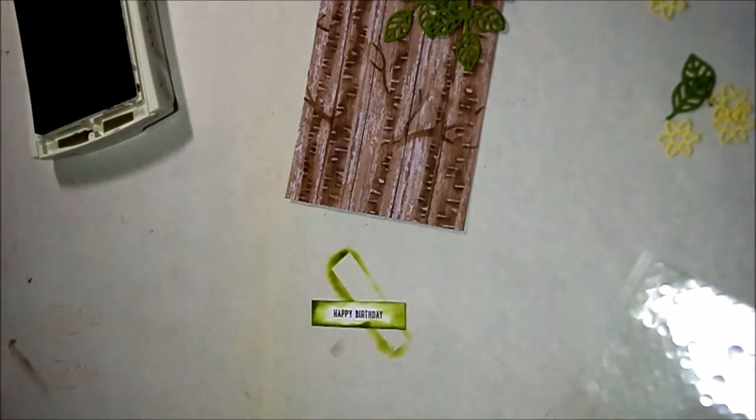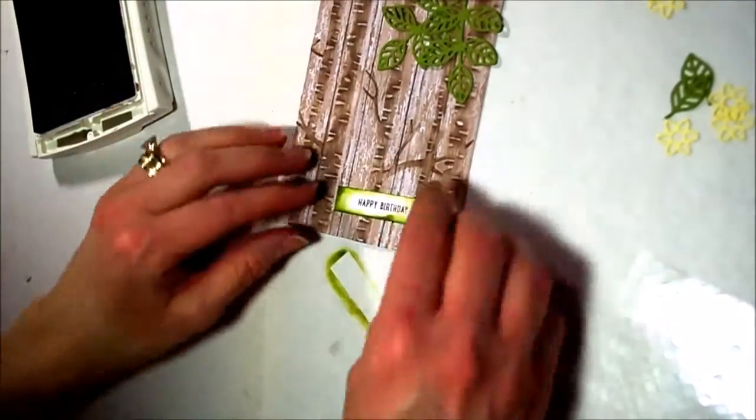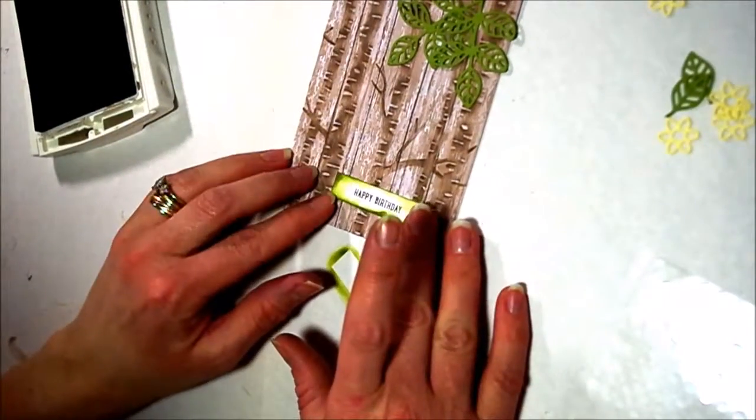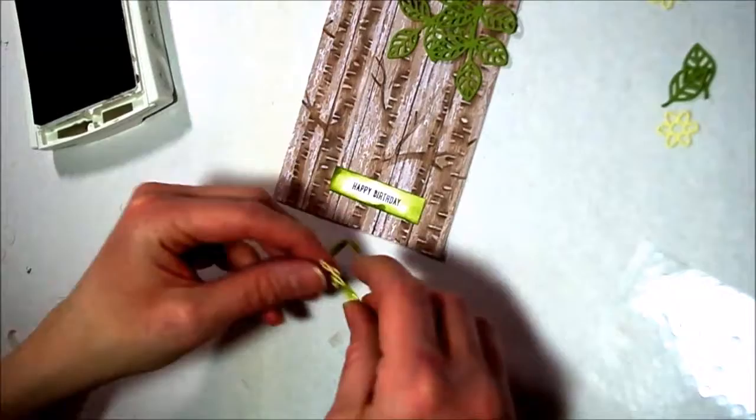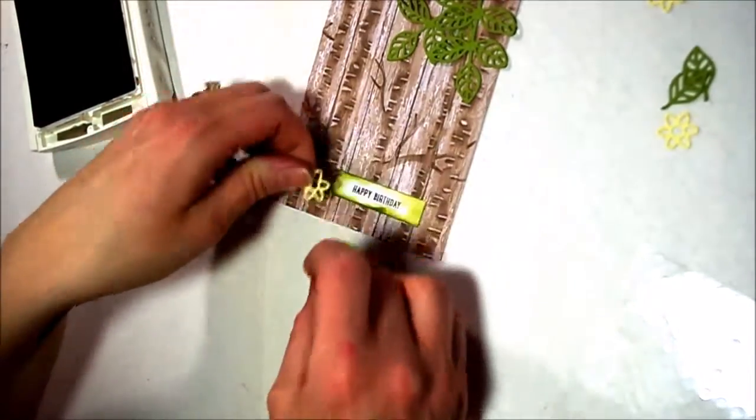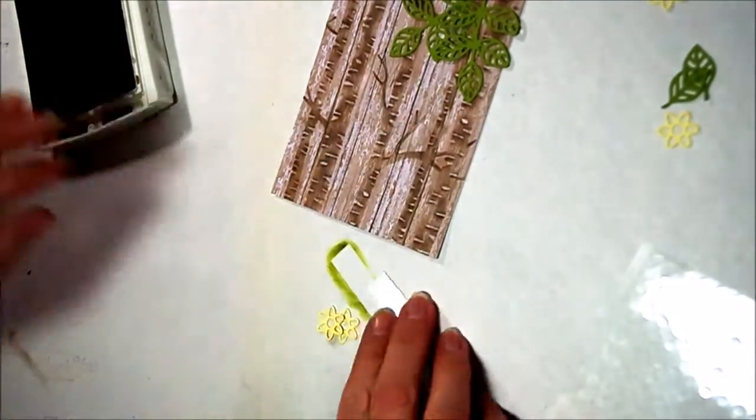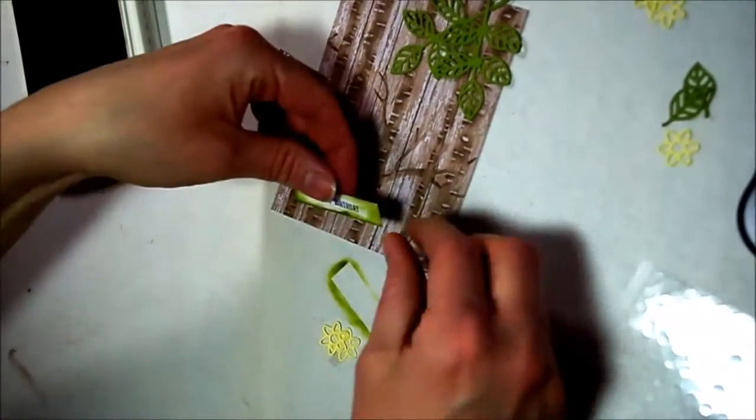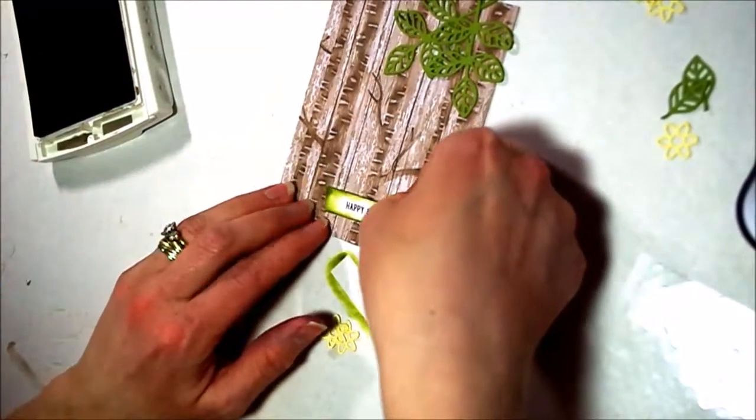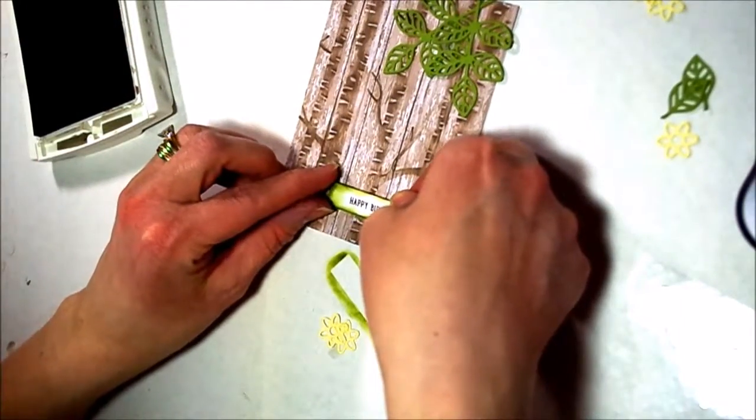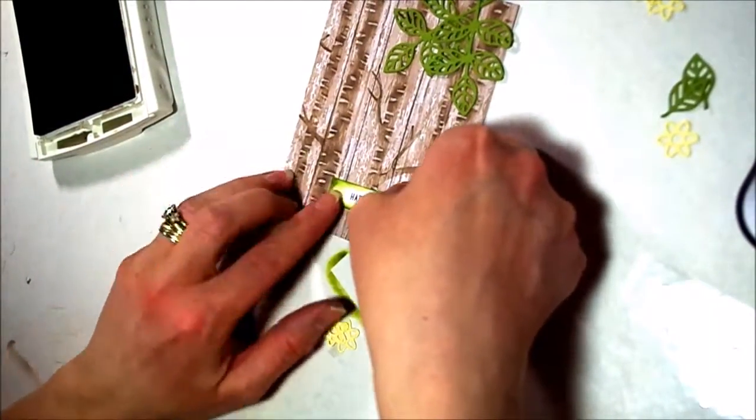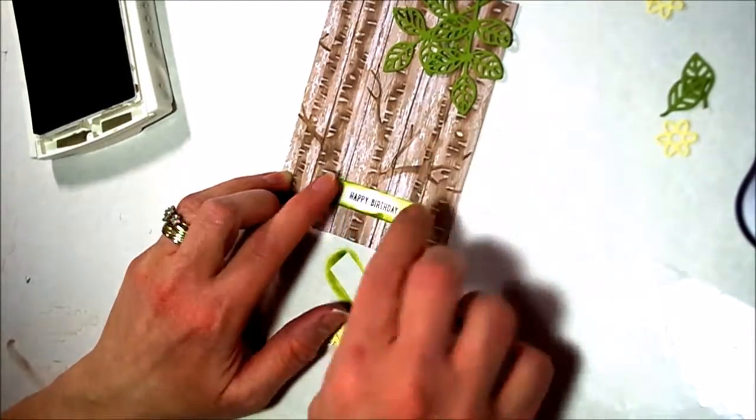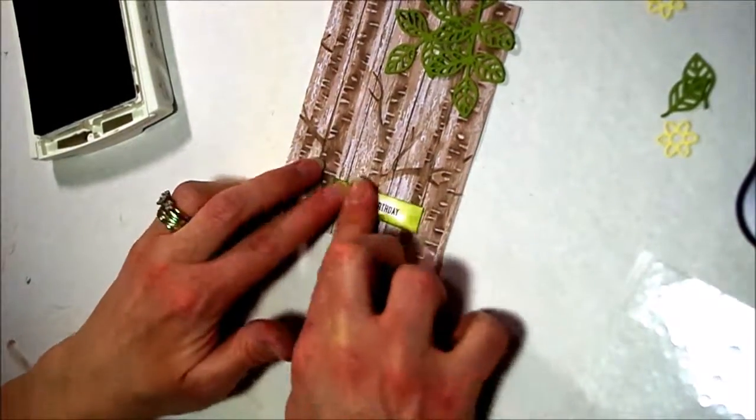And there we go. A happy birthday. And then I just went ahead and kind of, I'm going to put these around the side there. So let's put some, I'm going to just do some Fast Fuse real quick here. And just kind of line it up where I want it, and then I can put the flowers on the side there. Okay. There we go.